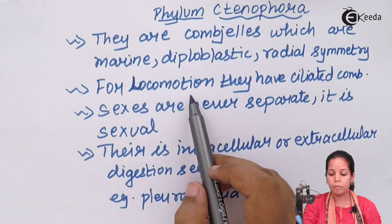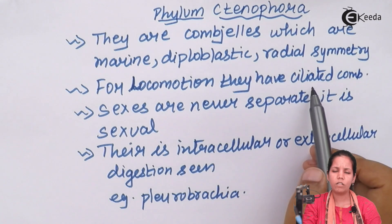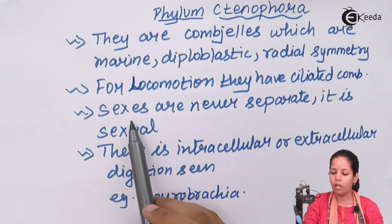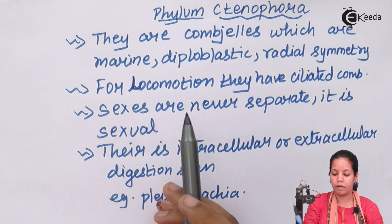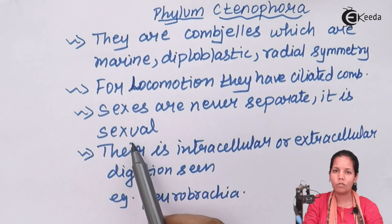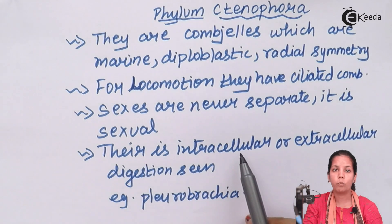For the purpose of locomotion, they have ciliated cones — cilia-like structures. Sexes in these organisms are never separate; they don't have a separate male and female, with one organism having both gametes, so reproduction is obviously sexual. Intracellular and extracellular digestion is seen depending upon the system.